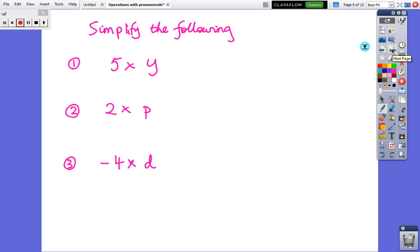So just have a go at those three questions. The last one's a little bit trickier because I put a minus sign, but when you're ready have a go and then pause and then come back live. 5 times a is 5a, 2 times p is 2p, and the last one is just minus 4d. You'll have plenty of chance to practice these, so don't be too worried.